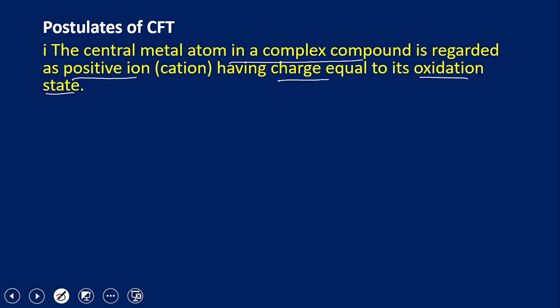The second postulate says that the ligands surrounding the metal cation are considered as point charges. They may be negatively charged or neutral. For example, Cl⁻ is a negative ligand, while H₂O is a neutral ligand. However, water has two lone pairs of electrons and can donate electrons to the metal cation. So ligands are considered as point charges that may be negative or neutral.